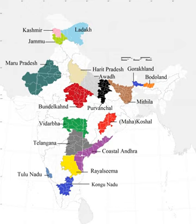There have been sporadic demands for a separate Malwa state with the probable capital at Indore. The region includes Madhya Pradesh districts of Agar, Dewas, Dhar, Indore, Jhabua, Mandsaur, Neemuch, Rajgarh, Ratlam, Shajapur, Ujjain, and parts of Guna district and Sehore, as well as the Rajasthan districts of Jhalawar and parts of Banswara and Pratapgarh. The main language of Malwa is Malvi, though Hindi is widely spoken in the cities. This Indo-European, Indo-Aryan language is sometimes referred to as Malavi or Ujaini.